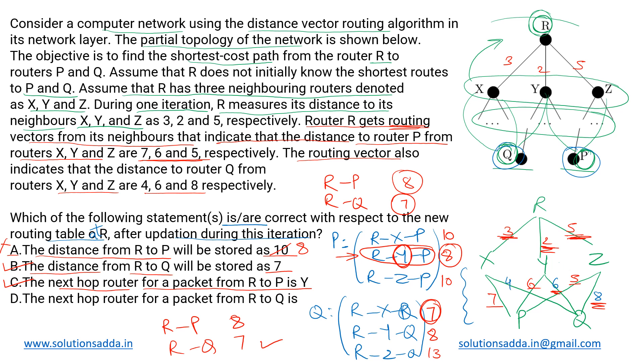And what about R to Q? This particular path has been chosen so the next hop from R will be X. The last one is saying the next hop for a packet from R to Q is... it should have been Z over here but we got the next hop to be X, so again this becomes incorrect. So we'll be going with B and C for this.